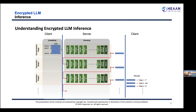Encrypted LLM inference means encrypting the embedding vectors and processing the entire computation while encrypted. After completing the 32 decoders, a single encrypted token is generated by performing the linear layer, Softmax, and Argmax. By repeating this process, multiple encrypted tokens can be generated and sent to the client, who can decrypt them. Thus, sensitive information is never exposed, maintaining confidentiality throughout the inference process.